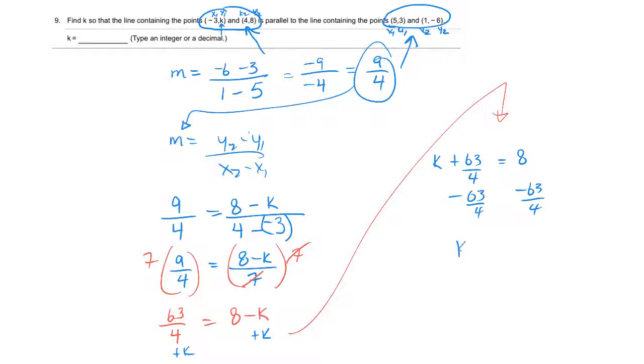So k is going to be equal to whatever 8 minus 63 over 4 would be. 15 and 3 quarters. I'm thinking negative 7 and 3 quarters. Or that's the same as negative 31 over 4, or negative 7.75. Something like that. That's sort of how you do that question.